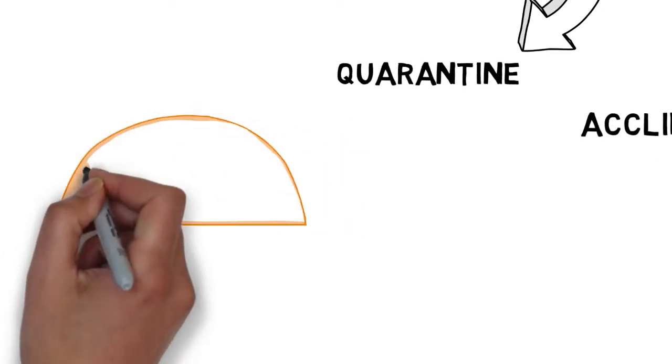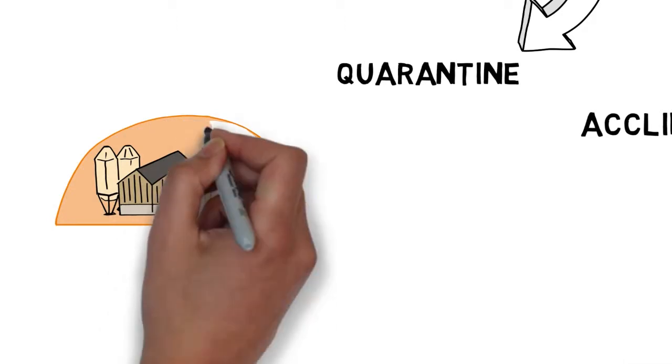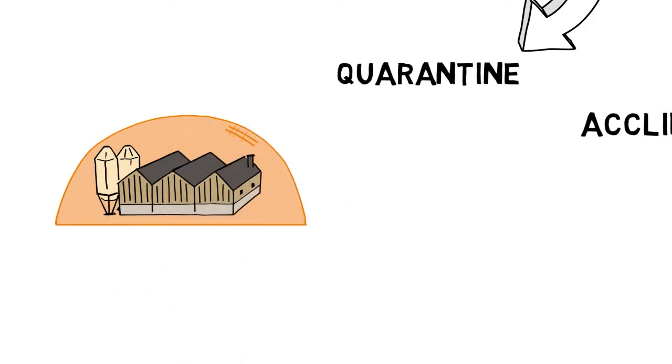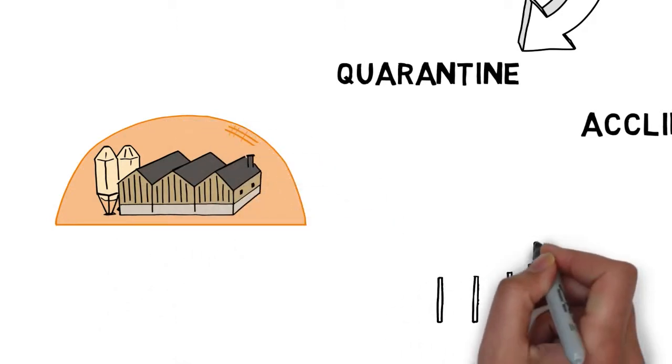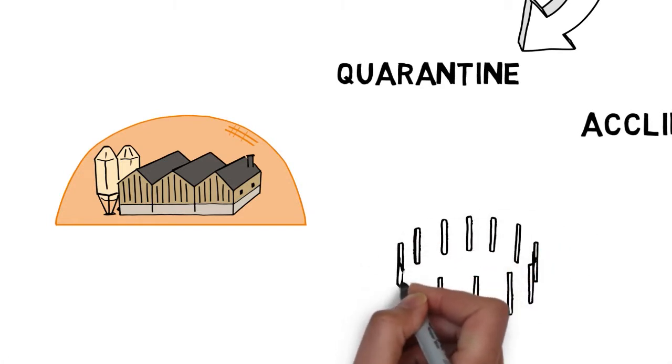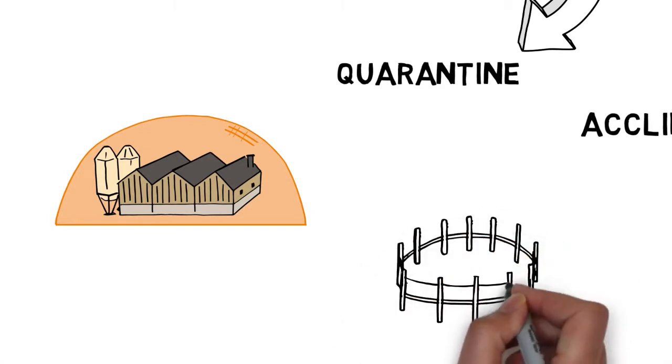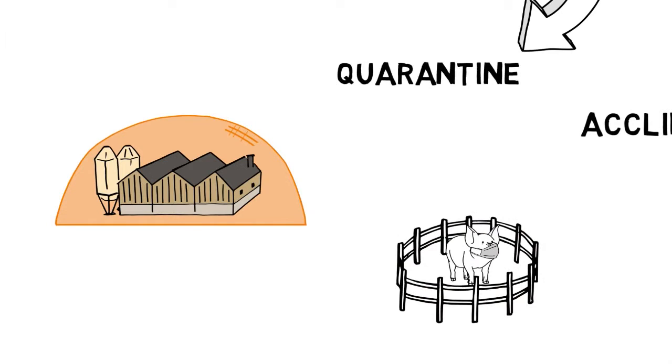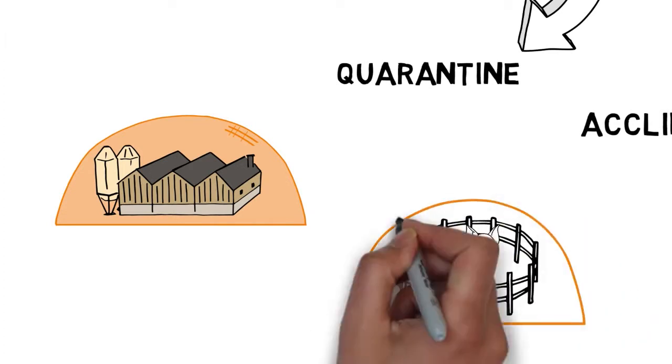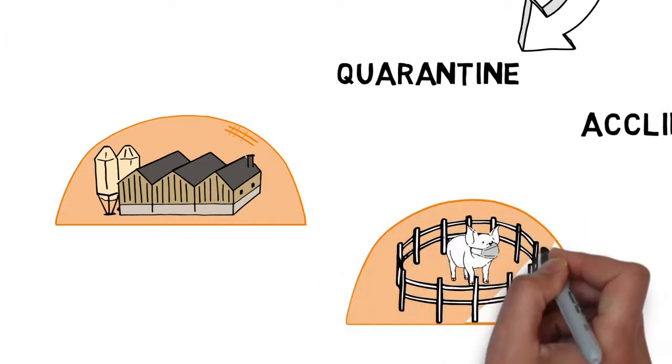Quarantine is a facility separated from the production area, ideally off-farm, where animals are kept isolated without any direct or indirect contact with the other animals. The objective is to guarantee that there is no transmission of pathogens from the new animals to the animals already present in the farm, and vice versa.